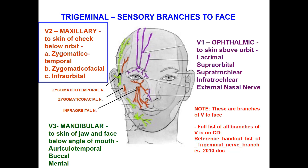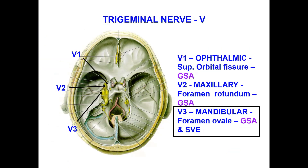The mandibular division: the skin of the jaw and face below the angle of the mouth, shown in green. Its branches include auriculotemporal, buccal, and mental. The trigeminal nerve — the last branch is the mandibular division, passing through the foramen ovale. As we said at the beginning, it has general sensation and also special visceral sensation.